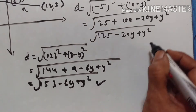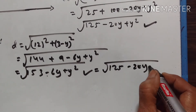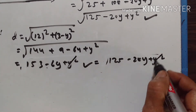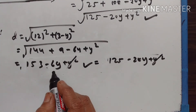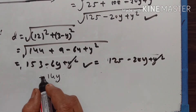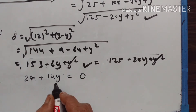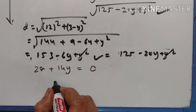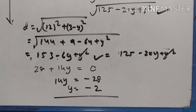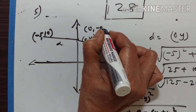Now equating the two distances: 125 - 20y + y² = 153 - 6y + y². The y² terms cancel. Moving terms: -20y + 6y = 153 - 125, so -14y = 28, giving 14y = -28, therefore y = -2. So the point on the y-axis is (0, -2).